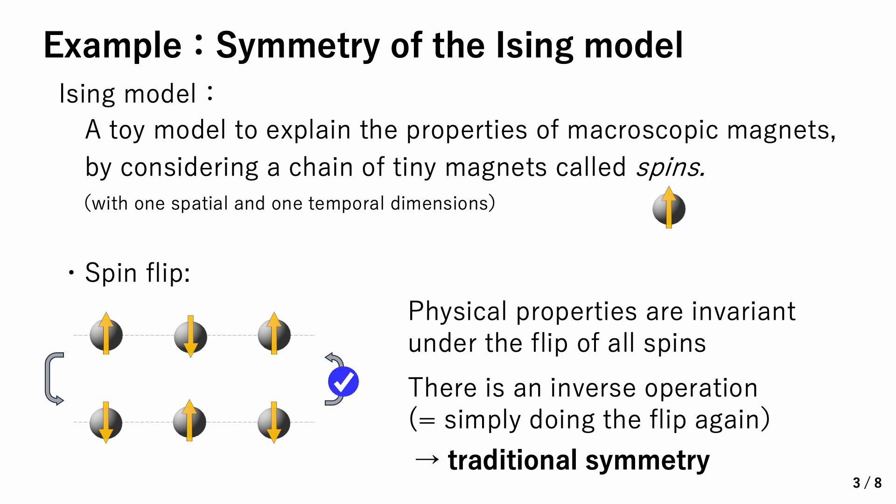Let me illustrate these two types of symmetries in the case of the Ising model. The Ising model is a toy model to explain the properties of macroscopic magnets by considering a chain of tiny magnets called spins. Let's first consider the spin flip. Physical properties of the system are invariant under the flip of all spins simultaneously, and there is an inverse operation, which is performed by simply doing the flip again. So a spin flip is a traditional symmetry.